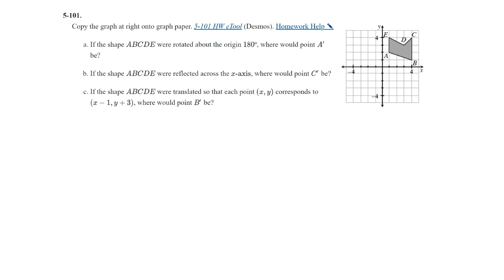Question 101, copy the graph at the right onto graph paper. If the shape ABCDE were rotated around the origin 180 degrees, where would point A prime be? The best thing about this to do is probably use the tracing paper, the patty paper. 180 degrees is going to be a half a rotation, so if you put that kind of crosshair in the middle where the origin is, and then rotate it a half a turn, or 180 degrees, same thing, where would the new point A be? And that is going to be represented, you can kind of tell right here, they go all the way over to this side, this would be A prime. So A prime would move to negative 1, negative 2.